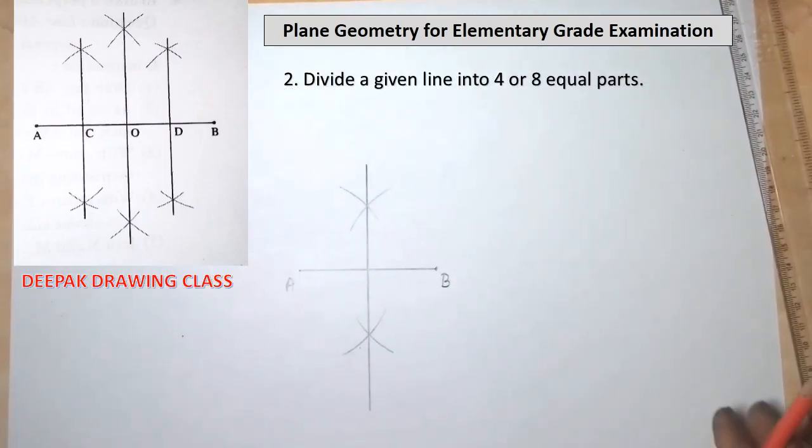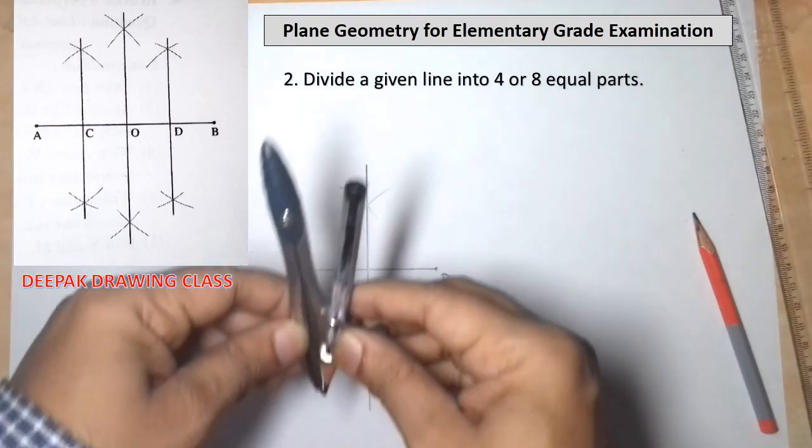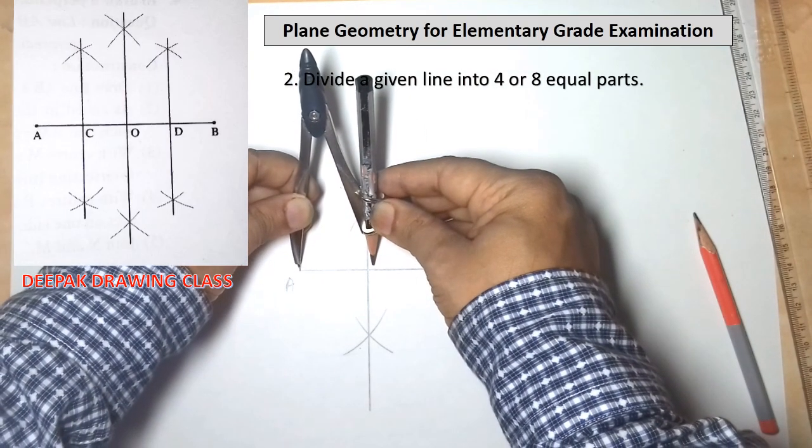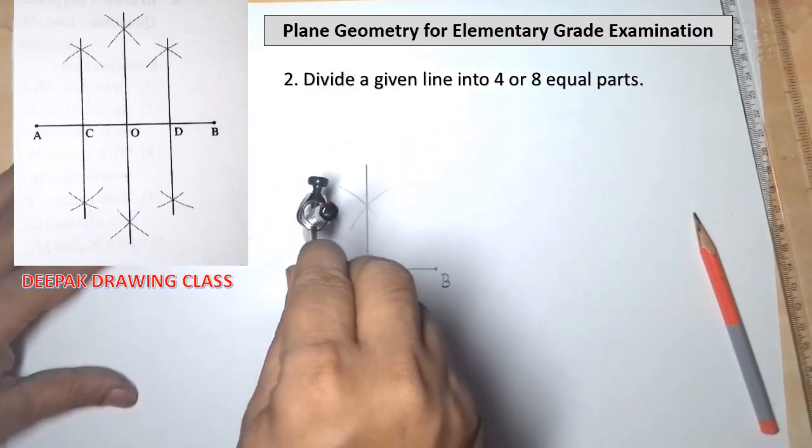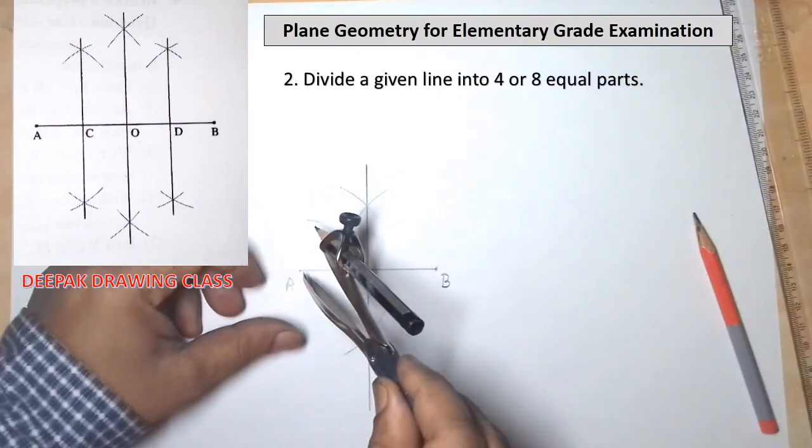Name the bisecting point as point O. Then take a compass and now divide line AO into further two equal parts. Here with point A as the center and radius slightly larger than half of line AO,